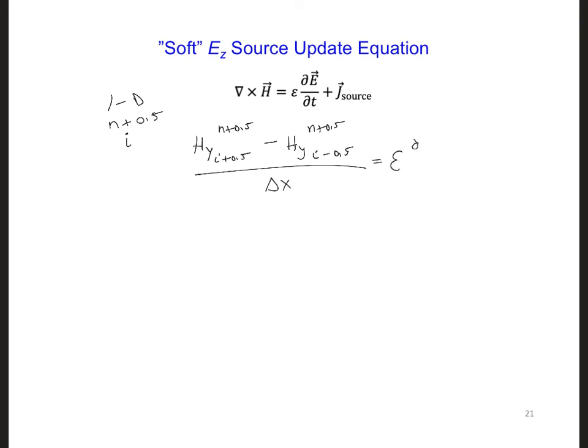That equals epsilon times (EZ at position I, time N plus 1, minus EZ at I, time N) over delta T, plus JZ at I, N plus 0.5, which is J source.